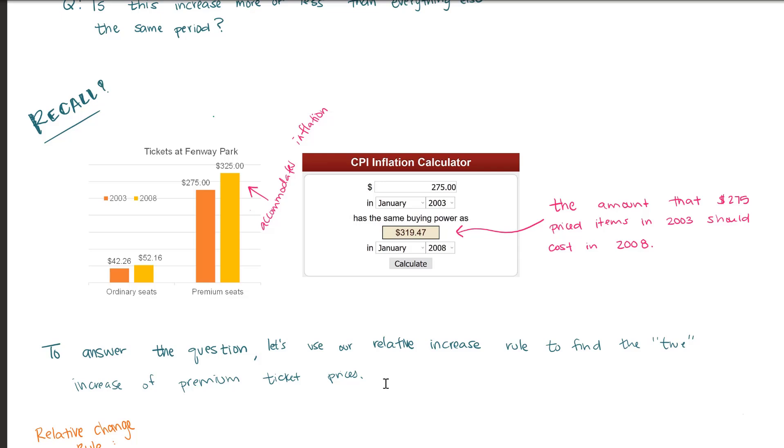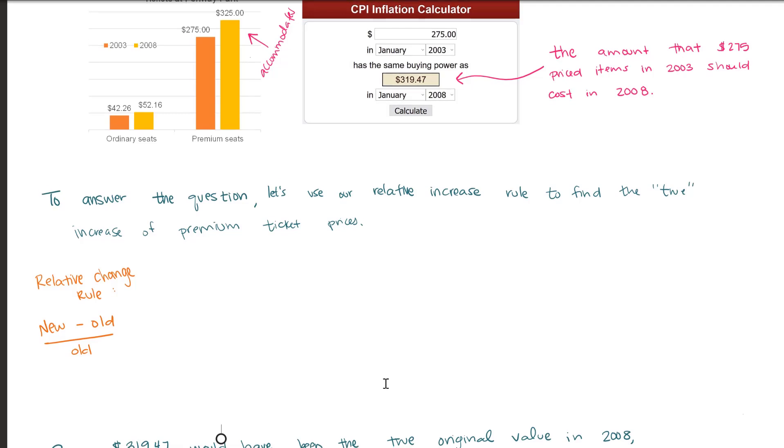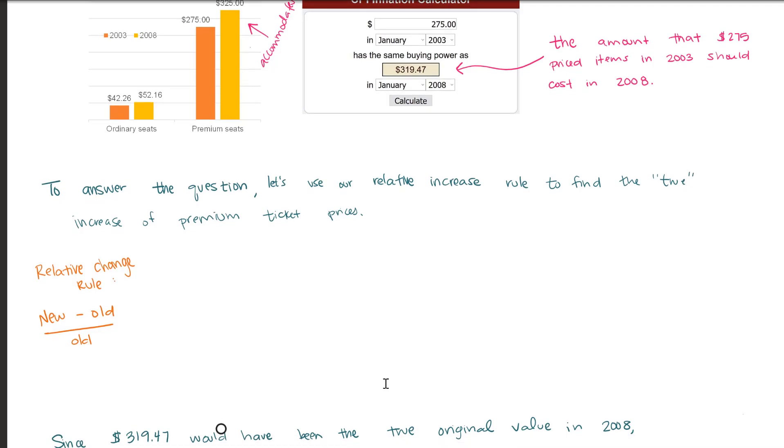This is due to inflation. Obviously, the premium seats were worth more than $319.47. So they did have an increase outside or after inflation. Now, let's go ahead and determine what that true increase was. To do this, we're going to use that relative change rule that we learned in percentages.